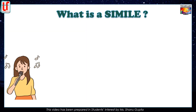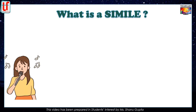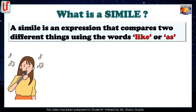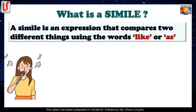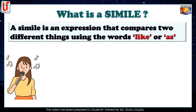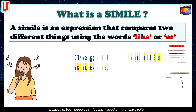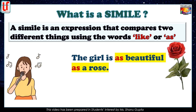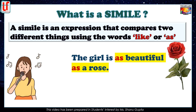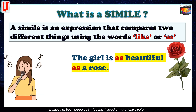First, a quick introduction. What exactly is a simile? Simply put, a simile is an expression that compares two different things using the words 'like' or 'as.' For example, if I say the girl is as beautiful as a rose, I am comparing the beauty of this girl to a rose. The expression 'as beautiful as a rose' is a simile.